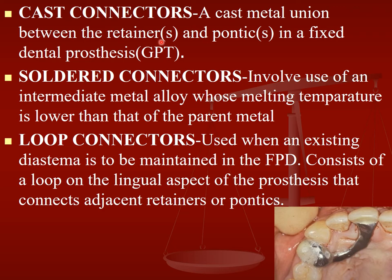A cast connector is a cast metal union between the retainer and pontic in a fixed dental prosthesis. A soldered connector involves use of an intermediate metal alloy with a melting temperature lower than that of the parent metal — it is basically soldered in between. The loop connector is used when an existing diastema is to be maintained in an FPD; it consists of a loop on the lingual aspect that connects the adjacent retainer to the pontic.